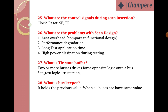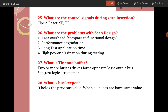What are the control signals during scan insertion? The control signals are clock, reset, scan enable, and test enable — these 4 are control signals. Test mode equal to 0 means functional mode; test mode equal to 1 means DFT mode. Scan enable equal to 1 means shifting operation; scan enable equal to 0 means capturing operation. Clock and reset are also control signals.